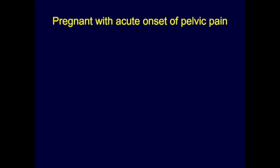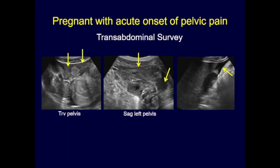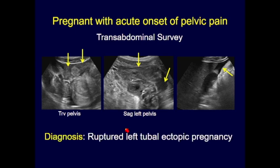Here's a pregnant patient with acute onset of pelvic pain. We always start with a transabdominal survey to get an overview: is there hemoperitoneum, are there pelvic masses? These images show very amorphous and complex-looking material within the pelvis outlining the bowel loops. There was no IUP visible, and there was a large amount of fluid in Morrison's pouch, confirming significant hemoperitoneum. This patient went to the OR and had a ruptured left tubal ectopic pregnancy — hemoglobin of 8, with 3–4 liters of blood in her pelvis.